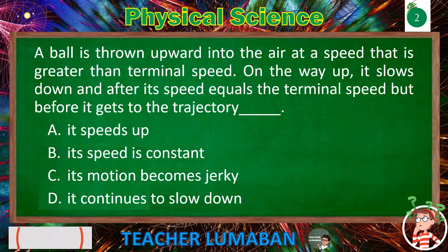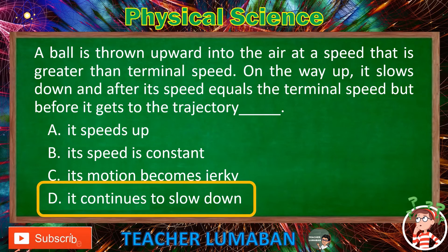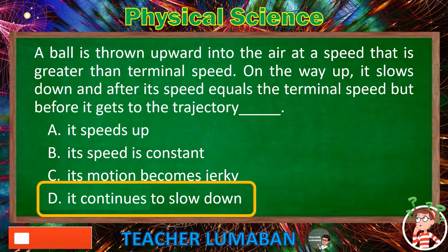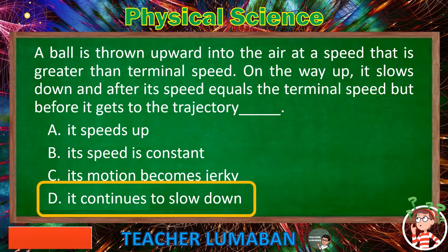The correct answer is letter D — It continues to slow down. A ball thrown upward at a speed greater than terminal speed slows down on the way up, and after its speed equals the terminal speed but before it reaches the top of its trajectory, it continues to slow down.